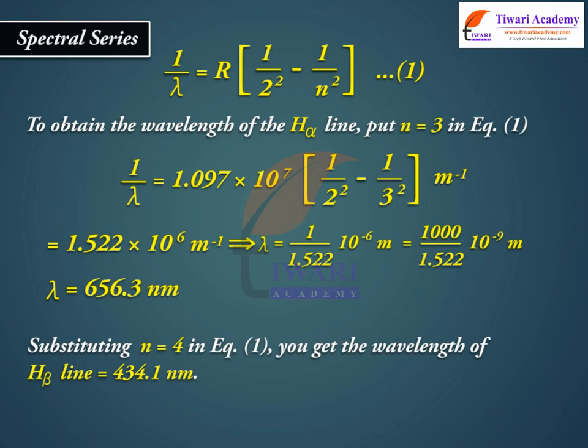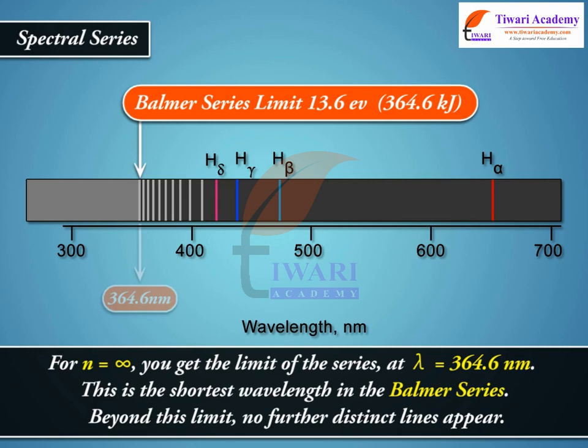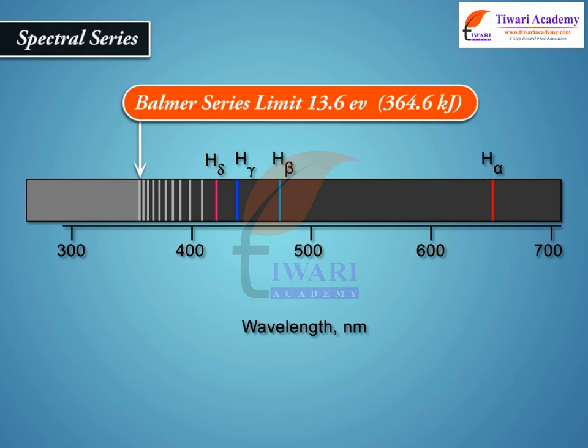Substituting n = 4 in the equation, you get the wavelength of the H-beta line equal to 434.1 nanometers. For n = infinity, you get the limit of the series at λ = 364.6 nanometers. This is the shortest wavelength in the Balmer series; beyond this limit, no further distinct lines appear.